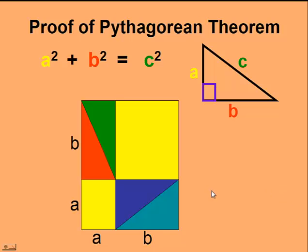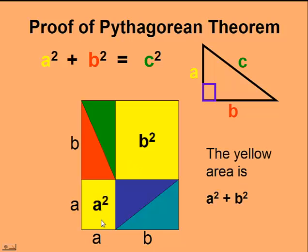We'll calculate the yellow area of the two squares that are produced. In the bottom square, A times A gives us A squared. And in the right corner, the yellow square is B times B, which is B squared. The total yellow area is A squared plus B squared.